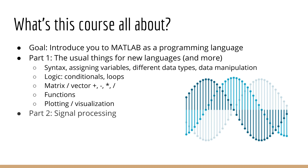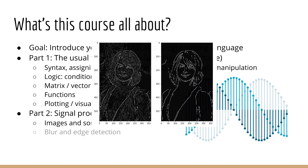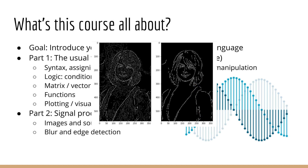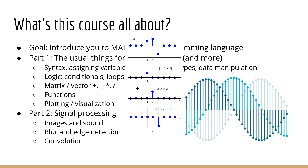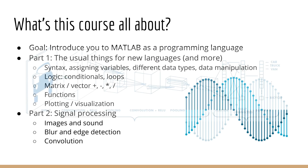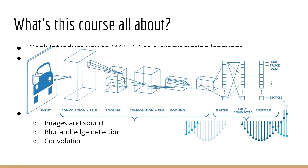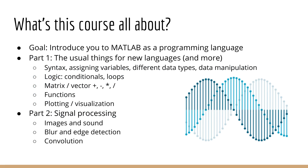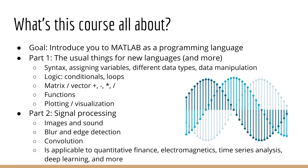The second part of this course focuses on a specific application of MATLAB: signal processing. In this section, we work with images and sound. We'll work with different kinds of filters, such as blurring and edge detection. We'll go over a very important operation called convolution. You might recognize this word because it's very popular these days with the advent of deep learning — one of the most successful architectures being the convolutional neural network. Signal processing is applicable to many different fields, including quantitative finance, electromagnetics, time series analysis, and deep learning.